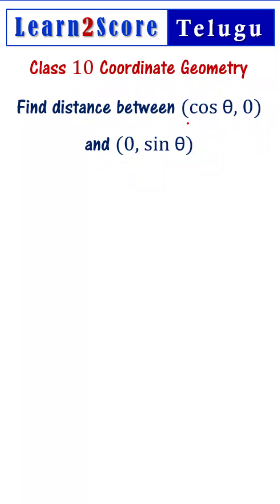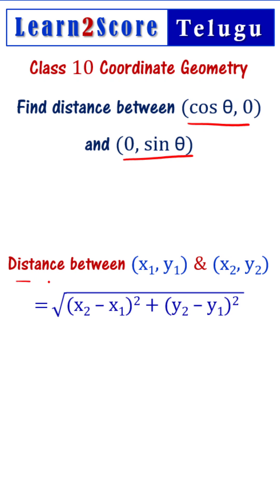Find the distance between (cos θ, 0) and (0, sin θ). We need two points to calculate distance. We have to use the formula for this.